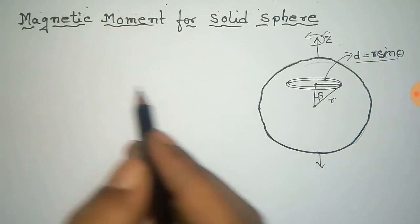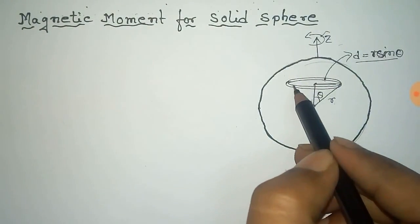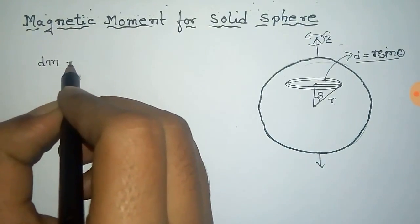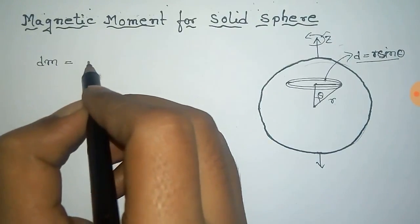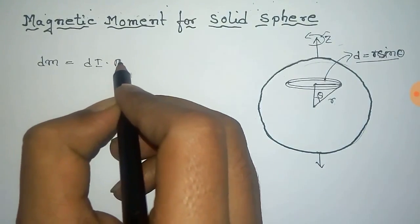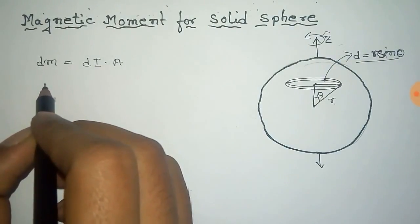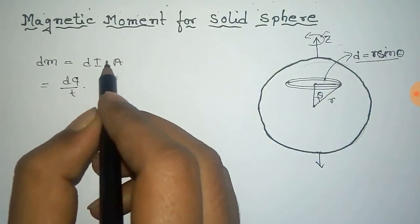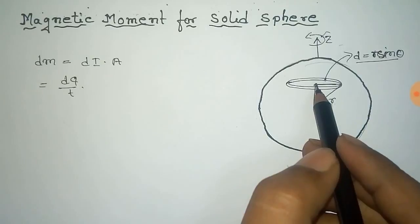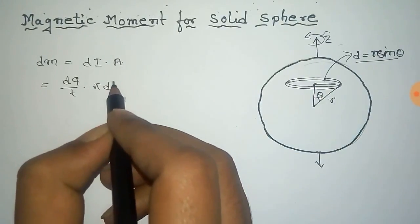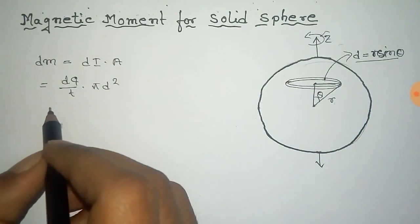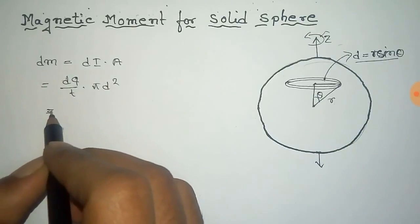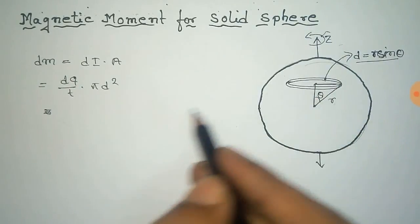The magnetic moment for this elementary ring is dM, which is equal to current times area. We know that magnetic moment equals current into area, so that is elementary current dI into area. Current equals charge divided by time, that is dQ by T, and the area is the area enclosed by the ring, that is pi D squared.